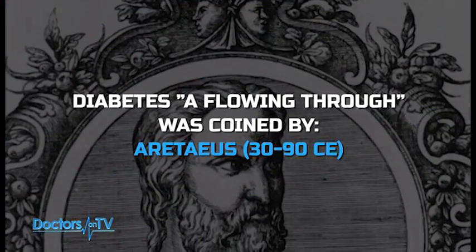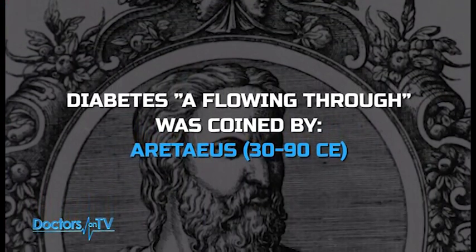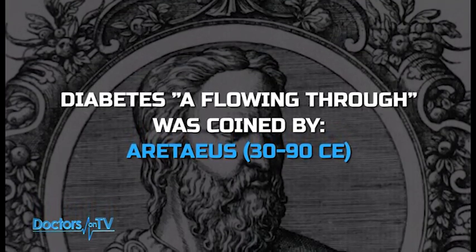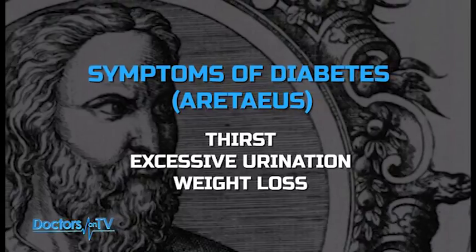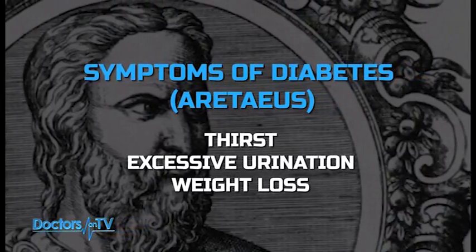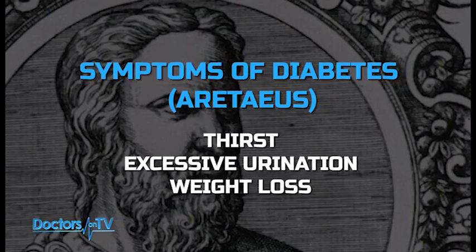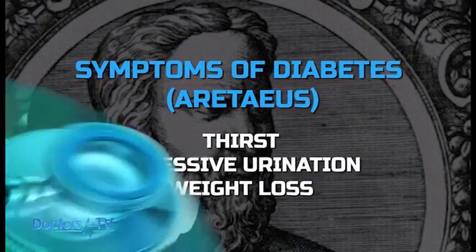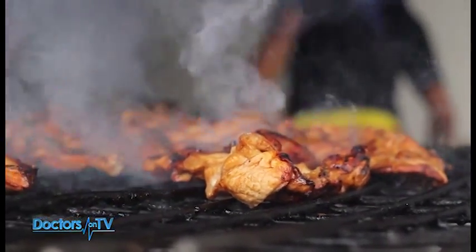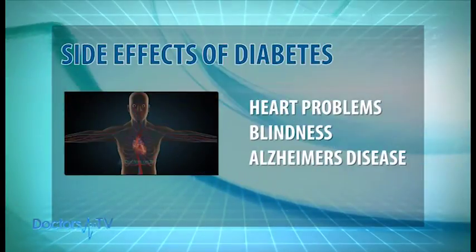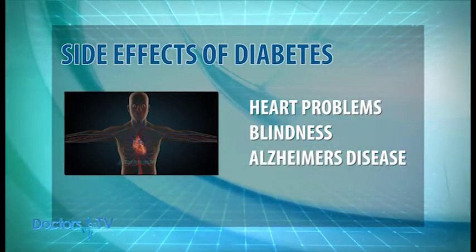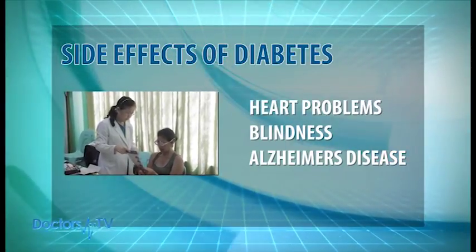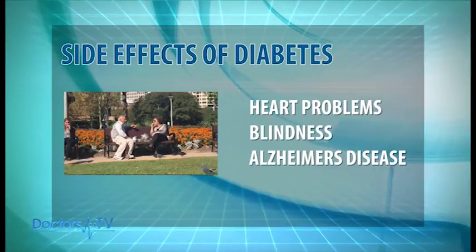Ang salitang diabetes, na ang ibig sabihin ay 'flowing through,' ay naimbento ng Greek physician na si Aretheus. Ayon sa tala ni Aretheus, kabilang sa sintomas ng diabetes ay ang palagiang pagkauhaw, pag-ihi ng marami, at pagbaba ng timbang. Ang sakit na diabetes ay bunga ng mataas na blood glucose o blood sugar ng isang tao. Kabilang sa mga sanhi nito ay ang maling pagkain at paninigarilyo. Ilan sa mga epekto ng sakit na ito ay ang pagkakaroon ng sakit sa puso, pagkabulag ng mata ng mga matatanda, at tsansa ng pagkakaroon ng Alzheimer's disease.